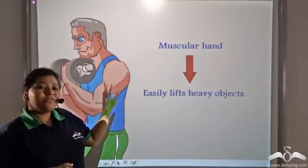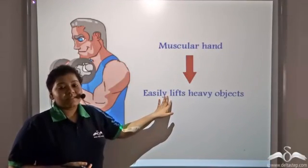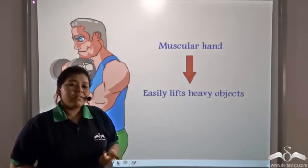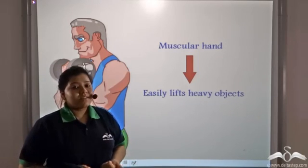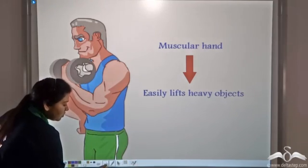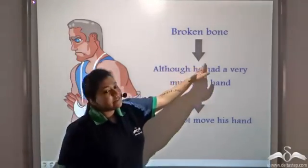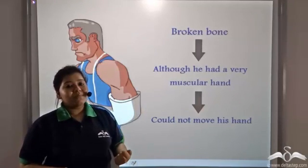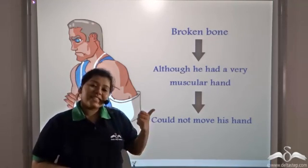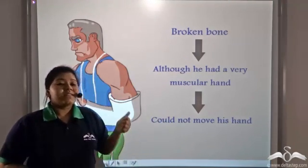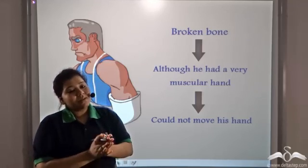This wrestler has very muscular hands, so he can easily lift heavy objects. One day, a heavy weight fell on his arm, breaking his arm bone. Now that his arm bone was broken, he could not even move his hands. In spite of having muscular hands, he could not move his arms, let alone pick up heavy objects. From here it is clear that bones provide support to the muscles, and bones and muscles together facilitate movement or locomotion.